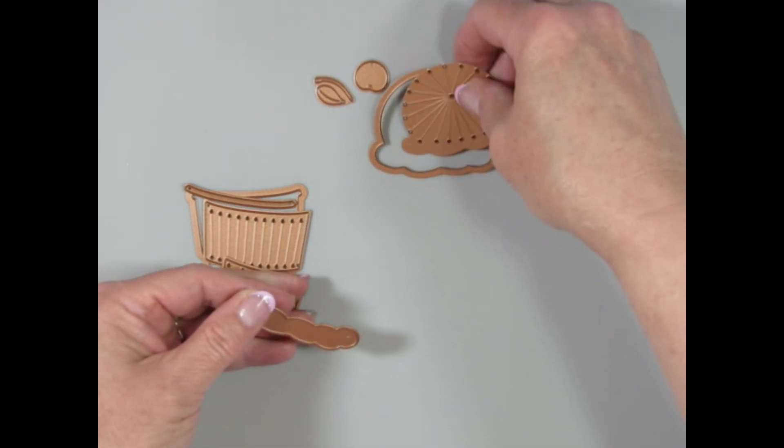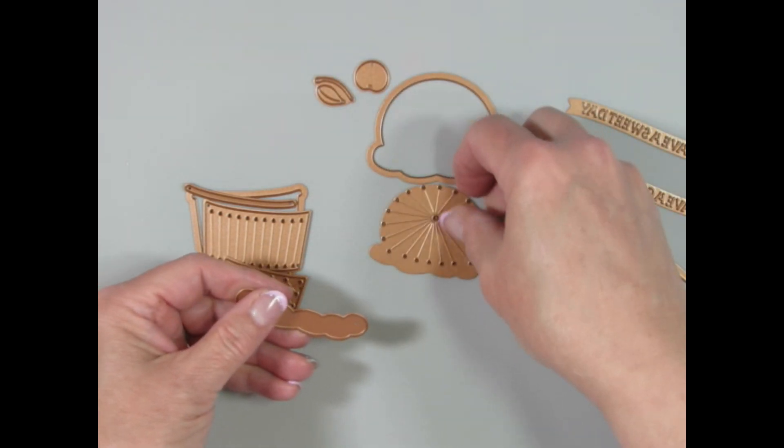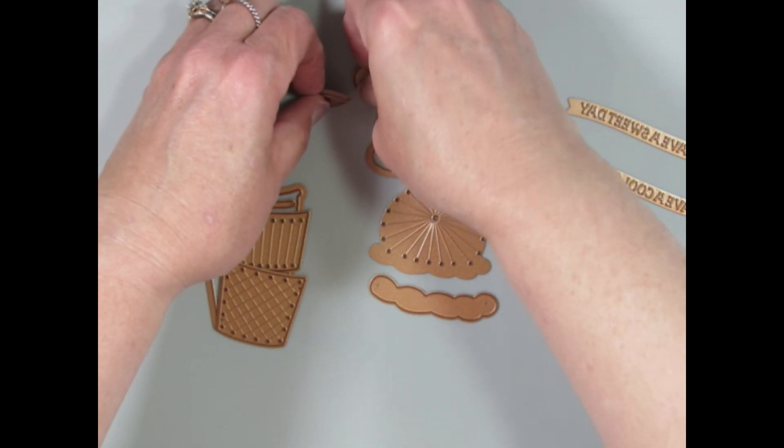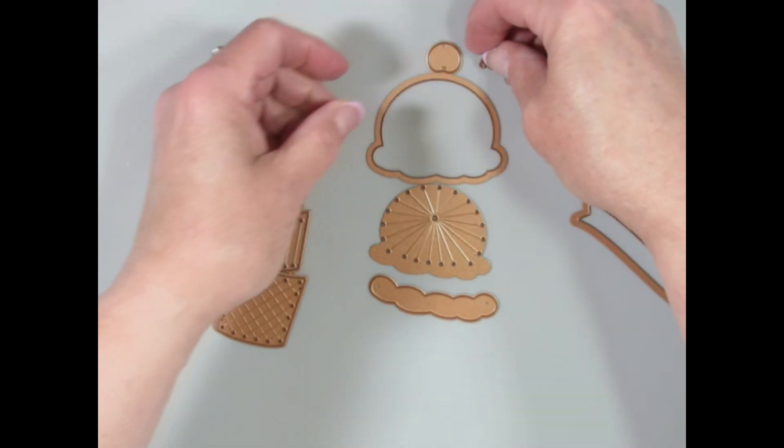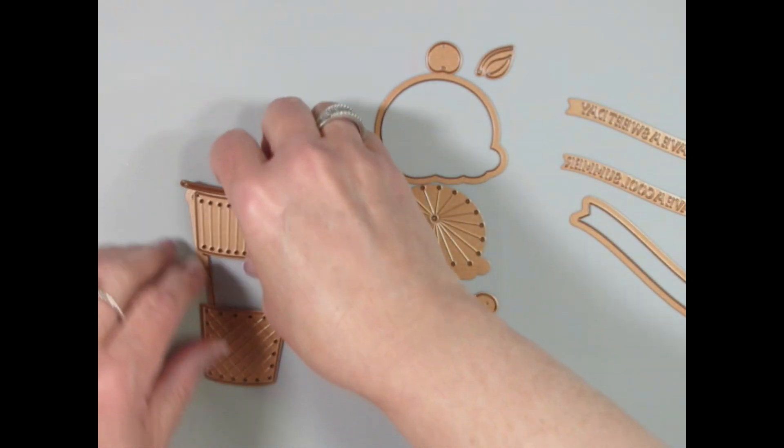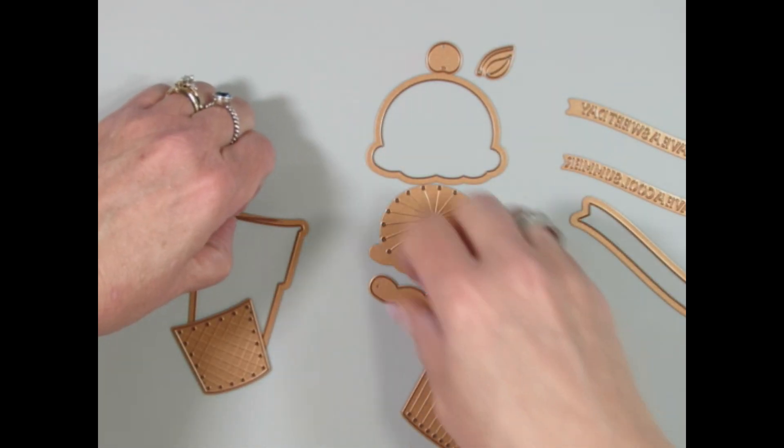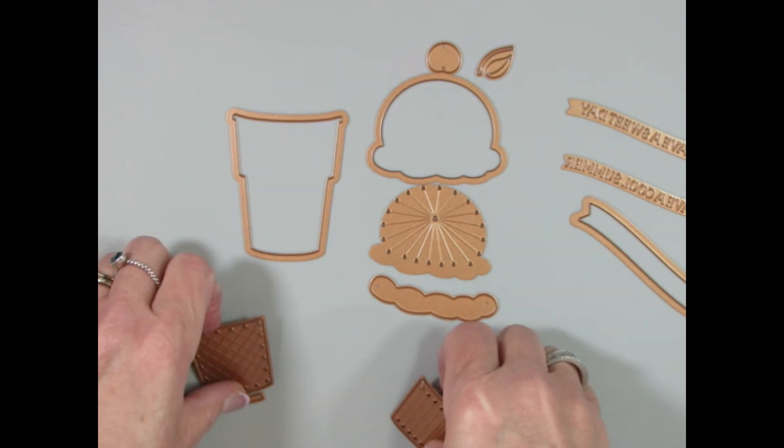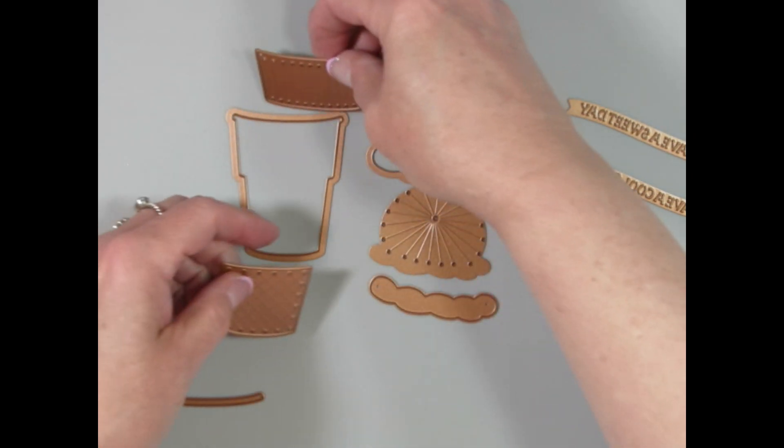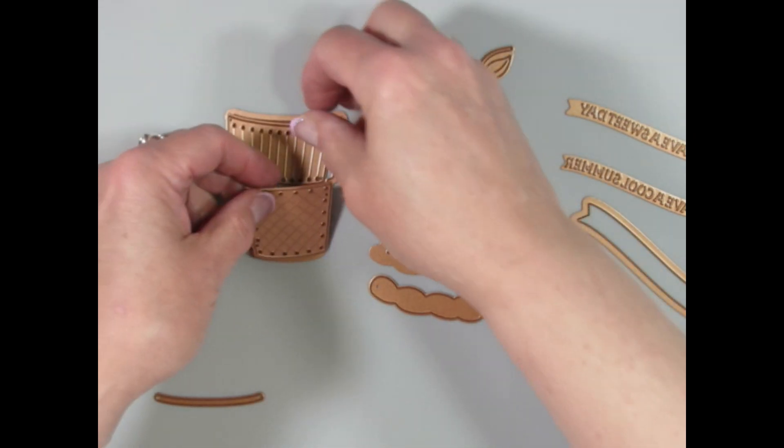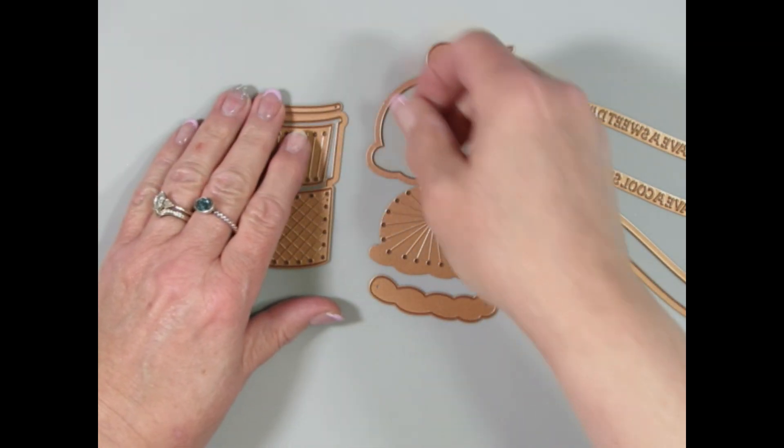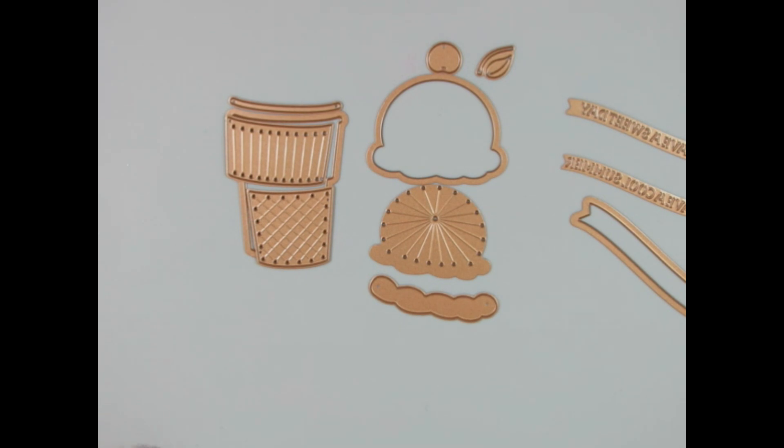The cherry has the cherry as one die and then the leaf and the stem as another. The cone has four dies, the outline of the cone and then the inside. The stitching areas are featured on the cone and on the ice cream, the scoop of ice cream itself.